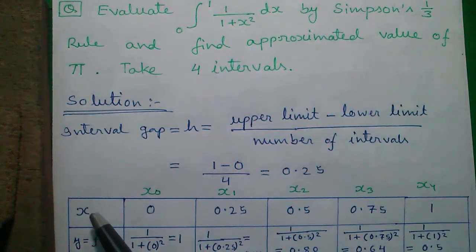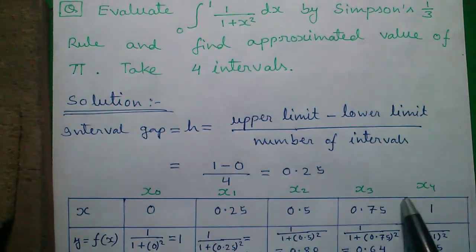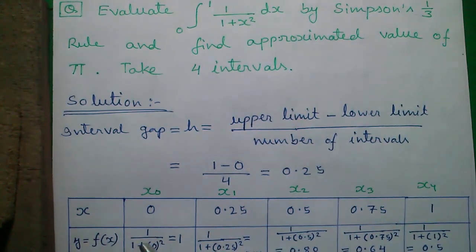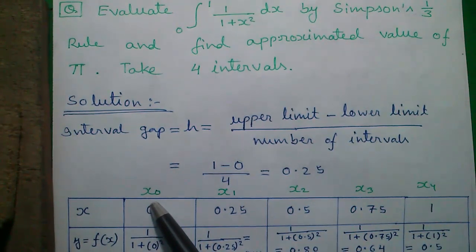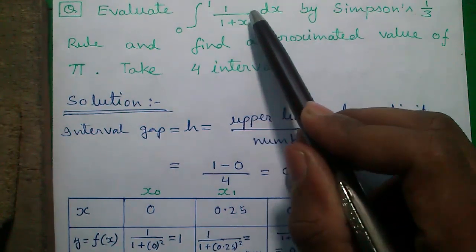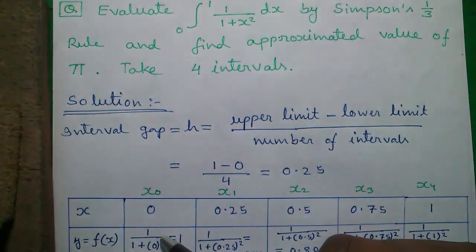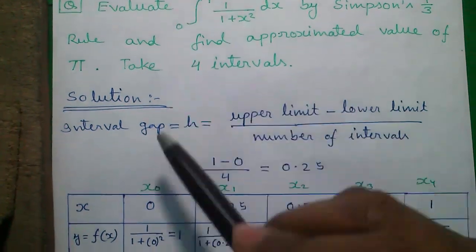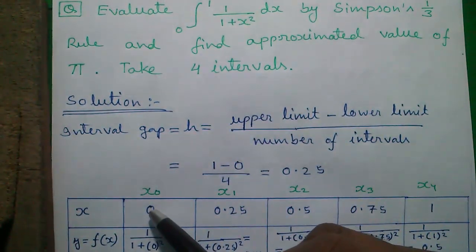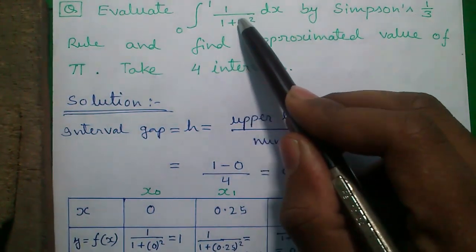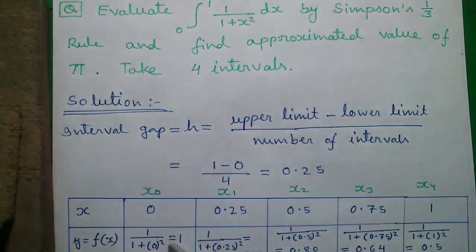Next, we have to construct this table. In row 1 we write all x values and row 2 we write all y or f(x) values. f(x) means we will take each value of x and put that value in place of the x in the expression. And the value obtained will be written in y or f(x) row. So, we will start with our lower limit 0 for x and for x equals to 0, y equals to 1 divided by 1 plus 0 square which is 1.